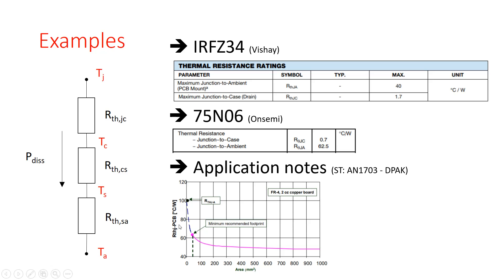There is a lot of information available in datasheets and application notes. When you are designing a MOSFET application, please use this information and apply this thermal model to calculate the maximum junction temperature. That way you can verify whether your application meets the requirements specified in the datasheet. That's all for now — thank you for watching and I'll see you next time.